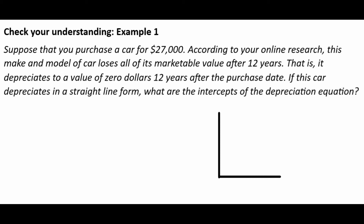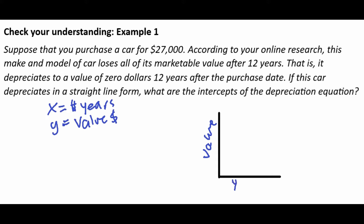Let's grab this graph and label the axes. We're going to say that x is the number of years, and y equals the value of the vehicle in dollars. So this axis is the value, and this down here is the years. When we first buy the car at year zero, the car is going to be worth $27,000. And after 12 years, the value of the vehicle is going to be zero. So this point and this point over here are both the x and the y intercept, and there's going to be a line that shows us the depreciation.